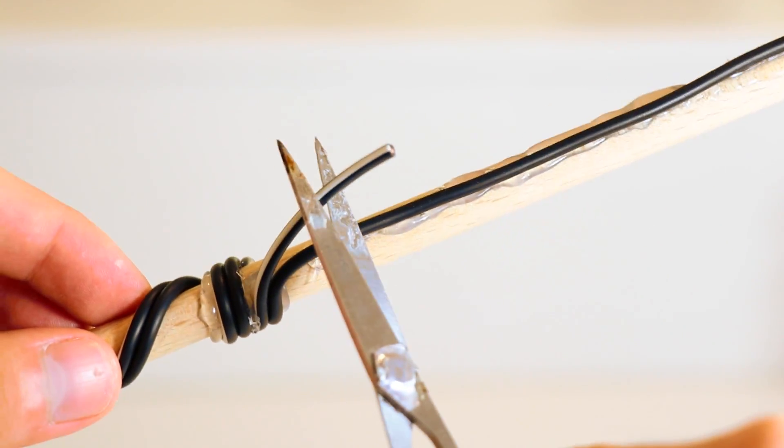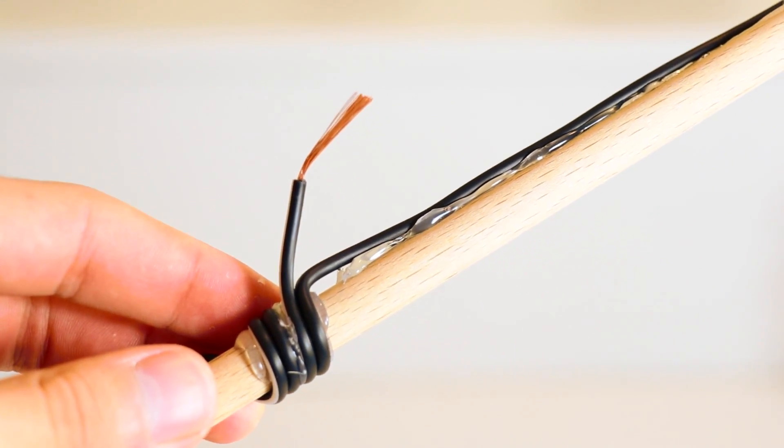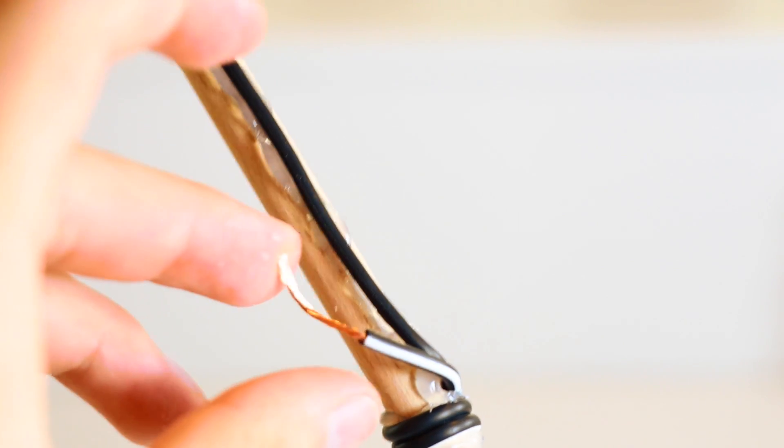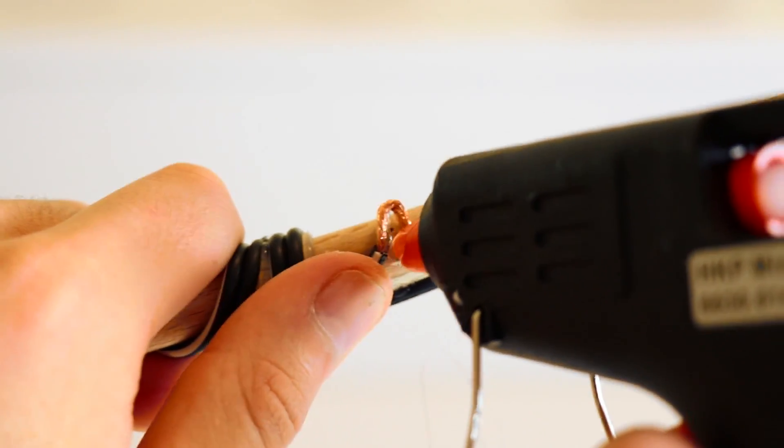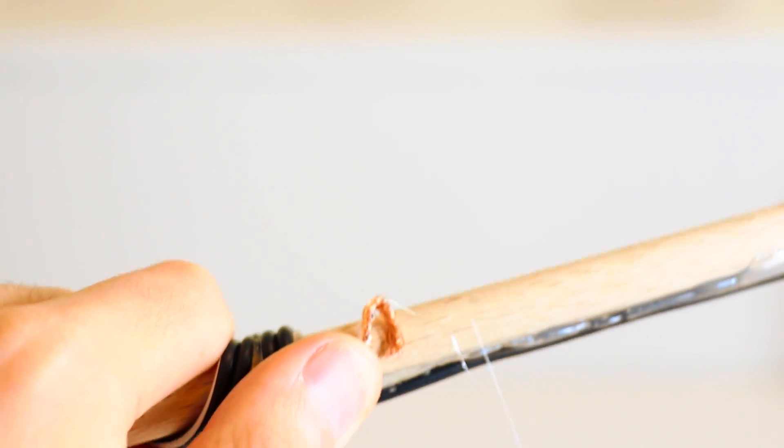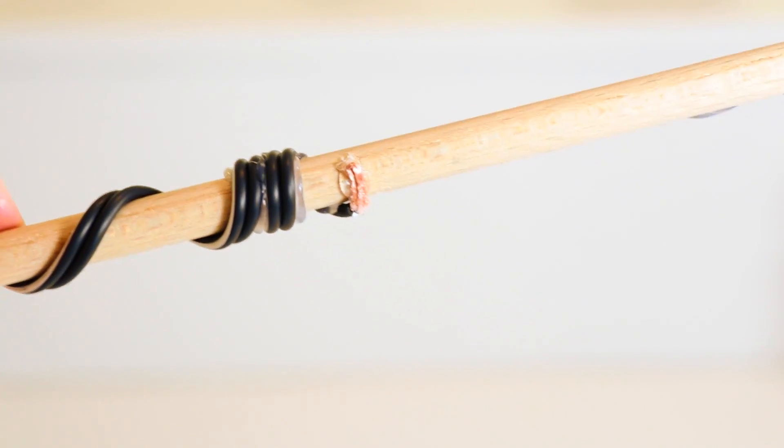And then strip the end of that wire. And now twist it and fold it in half, and then secure it to the dowel. Make sure the copper is still exposed.